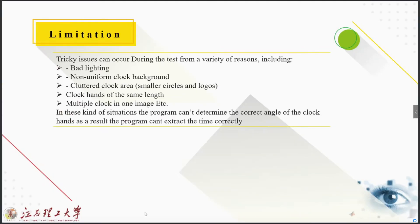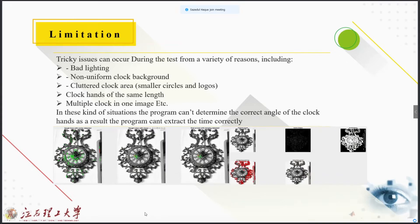Some tricky issues can occur during the test for a variety of reasons including black, bad lighting, non-uniform clock background, cluttered clock area, clock hands of the same length, and multiple clocks in one image, etc. In this kind of situation, the program cannot determine the correct angle of the clock hands, and as a result, the program cannot extract the time correctly or the program cannot read the image correctly. Here's a picture where the problem is the background is not uniform and the area is cluttered. That is why the program couldn't detect proper lines and edges. As a result, the program couldn't read the clock and can't extract the time properly.